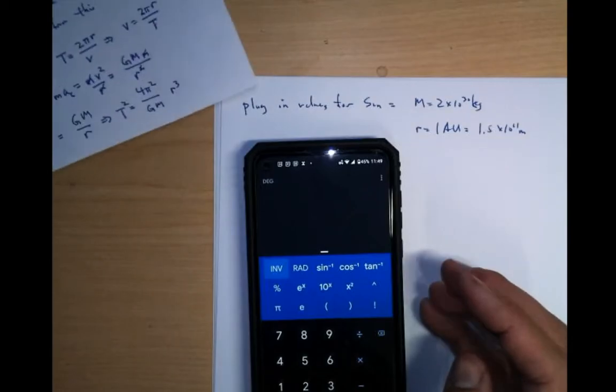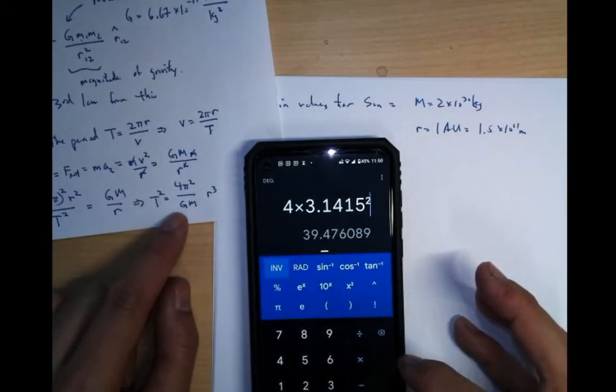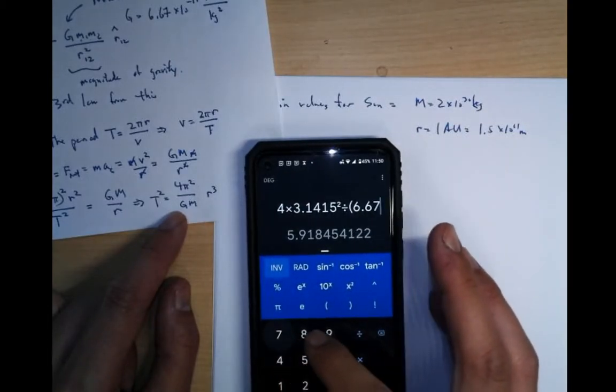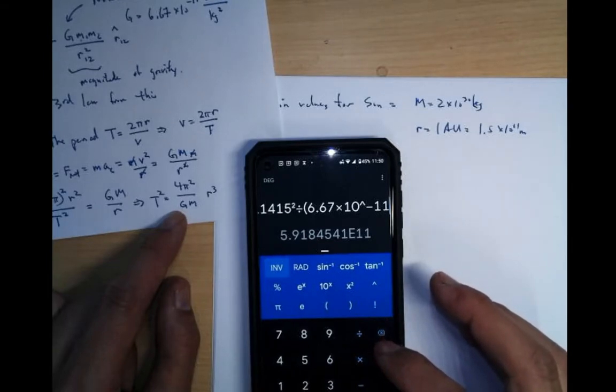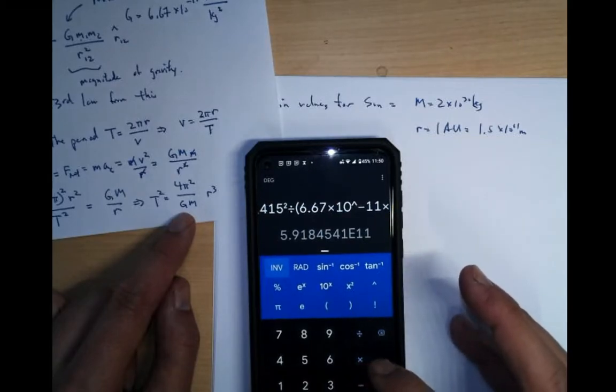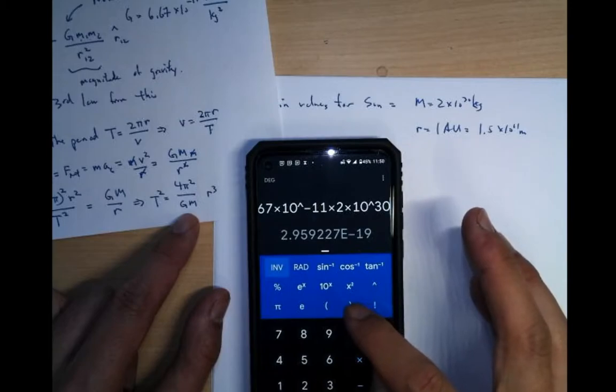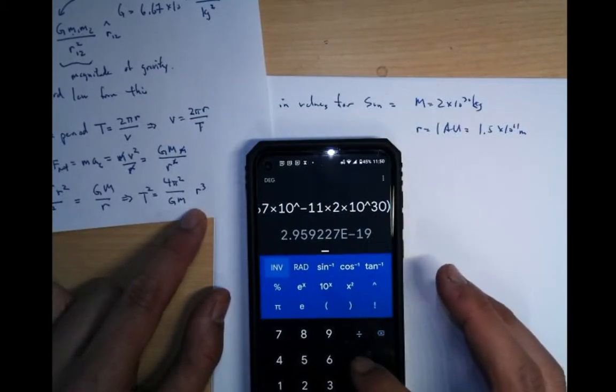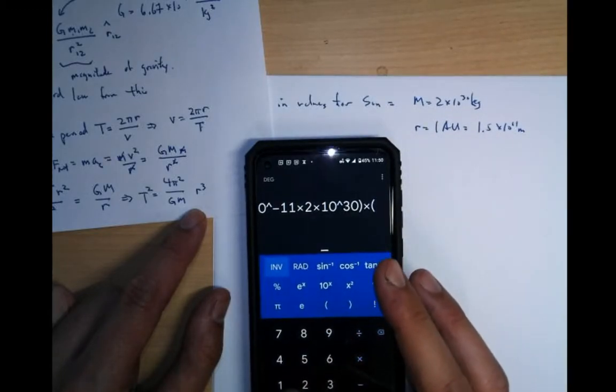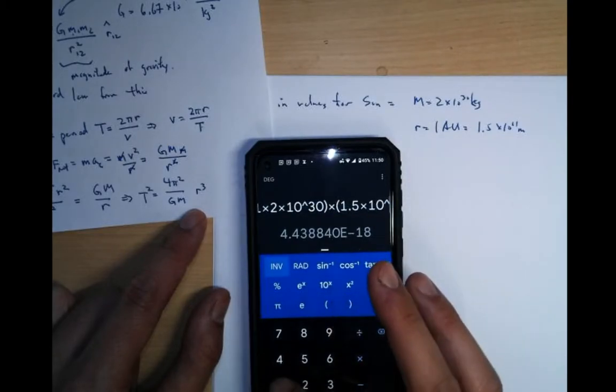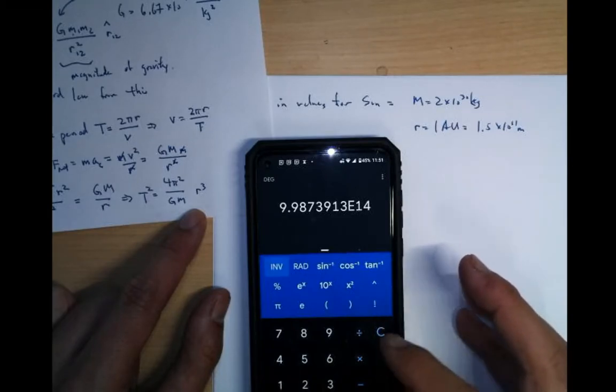Let's see. So let's see. I need the 4 pi. So it's 4 times pi squared 3.1415 squared. Divide this by g, 6.67 times 10 to the minus 11. And this is multiply times M, 2 times 10 to the 30. And then I'll multiply this again by r cubed, times 1.5 times 10 to the 11. Close that up. Raise that to the cubed power. And this is 9.98 times 10 to the 14.